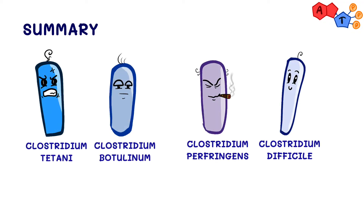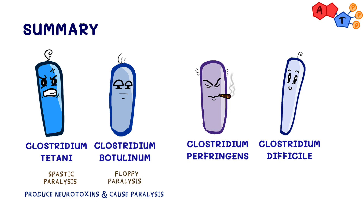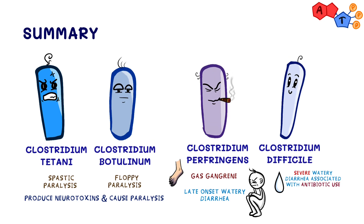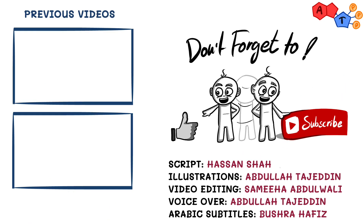To sum up, today we talked about the Clostridia family. Clostridium tetani and Clostridium botulinum both produce neurotoxins and both cause paralysis — tetani causes spastic paralysis while botulinum causes floppy paralysis. Clostridium perfringens causes gas gangrene. Both Clostridium perfringens and C. diff cause diarrhea — perfringens causes late-onset watery diarrhea, while C. diff causes severe watery diarrhea associated with antibiotic use. We hope you find it beneficial — don't forget to like, share, and subscribe to receive our latest videos.